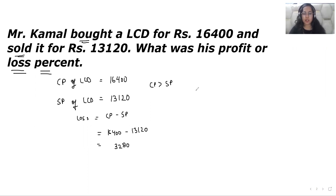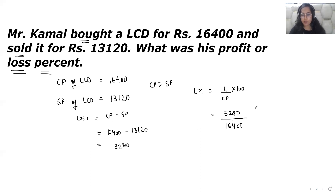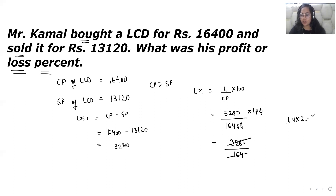Now we need to calculate the loss percentage. The formula for loss percentage is: loss over CP, multiplied by 100. If you don't know this formula, you can watch the previous video where we learned how to calculate loss percentage. So loss is 3,280 and the cost price is Rs.16,400, multiplied by 100. After eliminating zeros, we get 3,280 over 164. Since 164 times 20 equals 3,280, the loss percent is 20 percent.